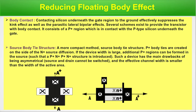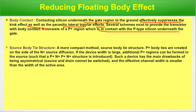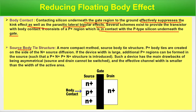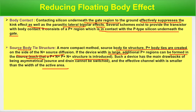To reduce floating body effect, two approaches are used: body contact and source-body tie structure. Body contact involves connecting the silicon underneath the gate region to ground, which effectively suppresses kink effect and parasitic lateral bipolar effect. It consists of a P+ region in contact with the P-type silicon underneath the gate. The source-body tie structure is a more compact method where P+ body ties are created on the side of the N+ source diffusion — although its main drawback is being asymmetrical and having a smaller effective channel width.